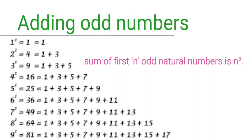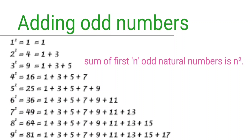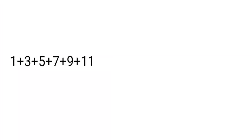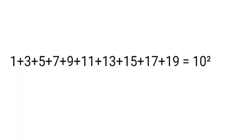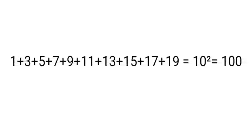The sum of the first n odd natural numbers equals n². For example, the odd numbers 1, 3, 5, 7, 9, 11 — their sum is 36, which is 6². And 1 + 3 + 5 + 7 + 9 + 11 + 13 + 15 + 17 + 19 — these are 10 consecutive odd numbers — their sum is 100, which is 10².